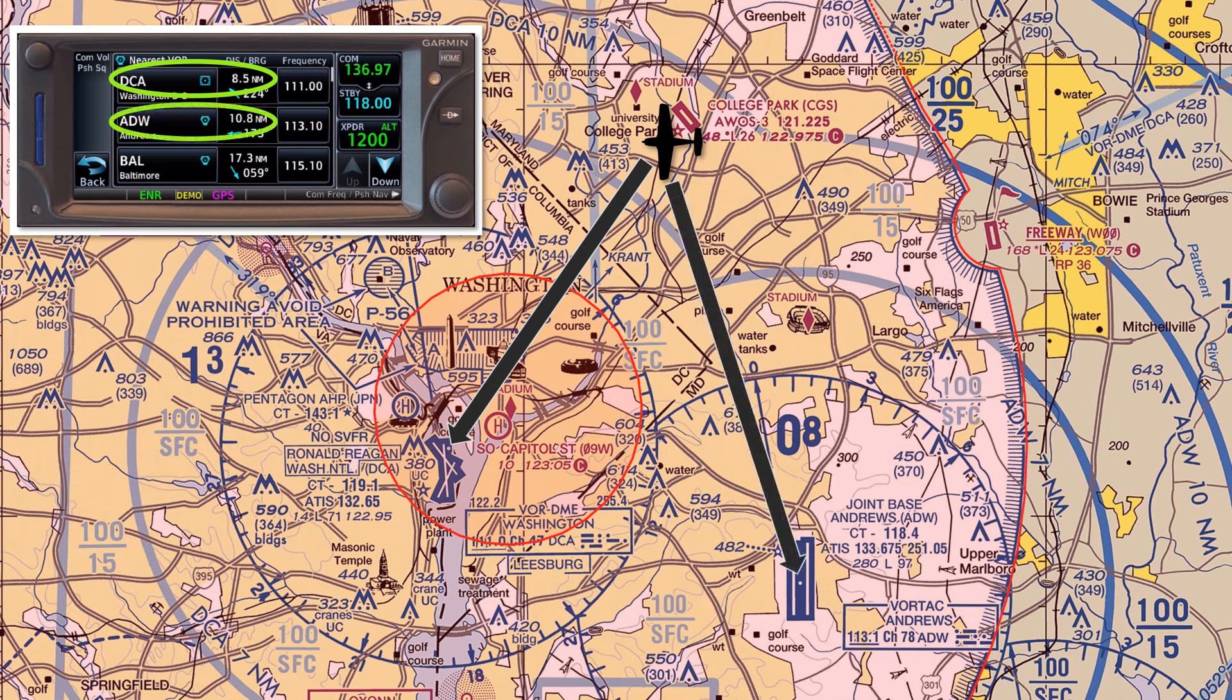Note that this isn't slant range like with DME, it's ground distance. So those same errors we saw flying low and close to the transmitter won't be replicated with GPS.